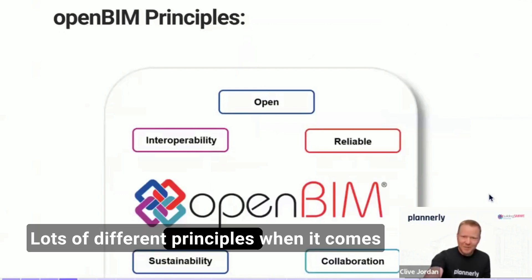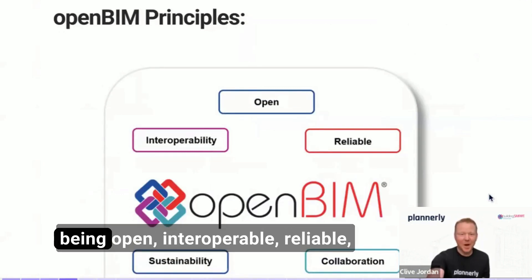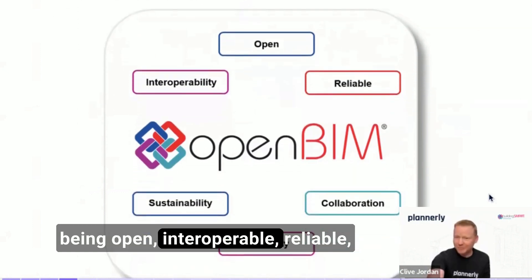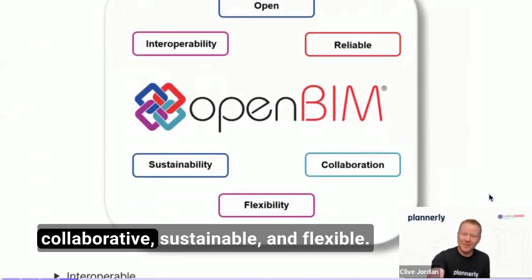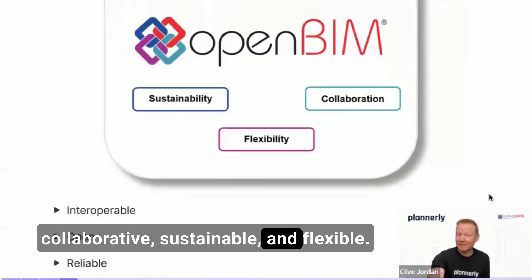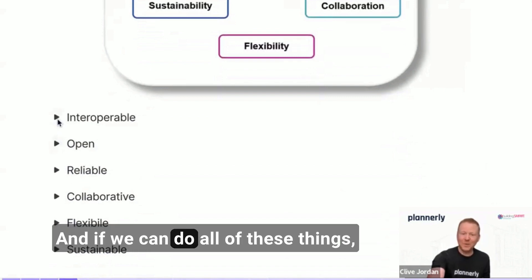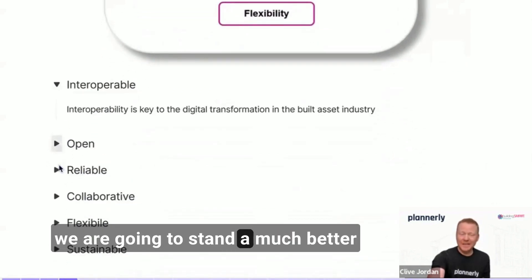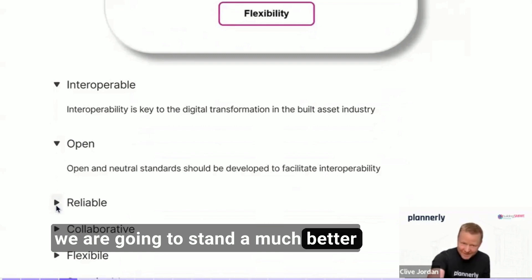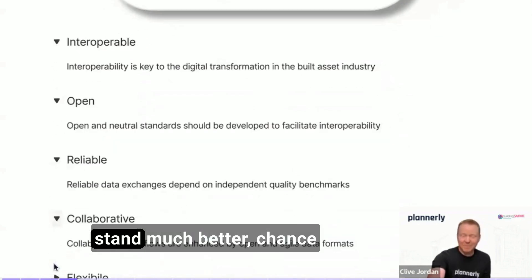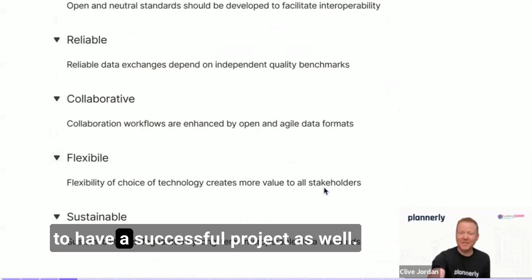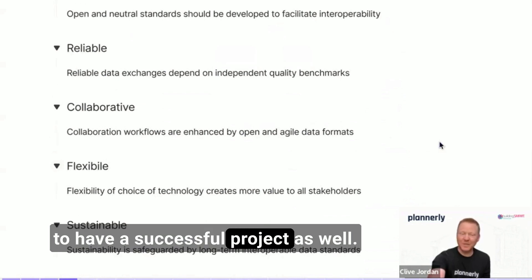There are lots of different principles when it comes to OpenBIM, but it's mainly about being open, interoperable, reliable, collaborative, sustainable, and flexible. And if we can do all of these things, we are going to stand a much better chance to have a successful project as well.